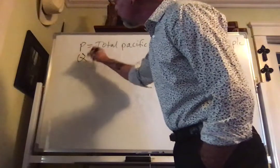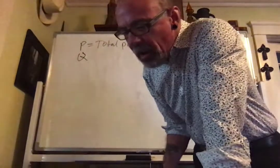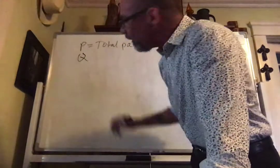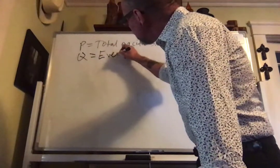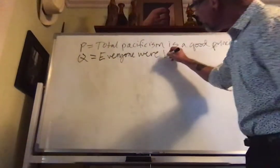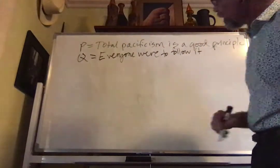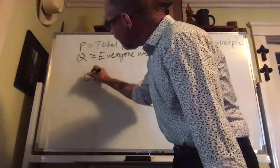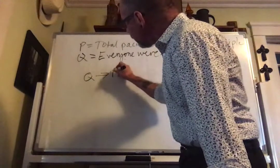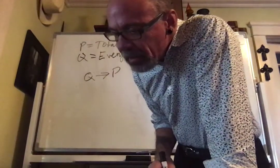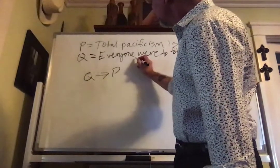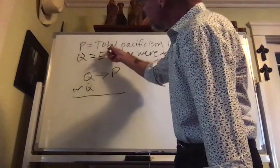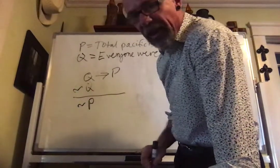After 'if,' we get another variable assignment: 'everyone were to follow it' — let Q stand for that. So for the first premise we've got P if Q. Since 'if' introduces the antecedent and the antecedent goes before the arrow, the first premise is Q arrow P. The next premise says 'not everyone does' — that's the negation of Q. And the conclusion is 'so it isn't,' meaning total pacifism is not a good principle, which is the negation of P.